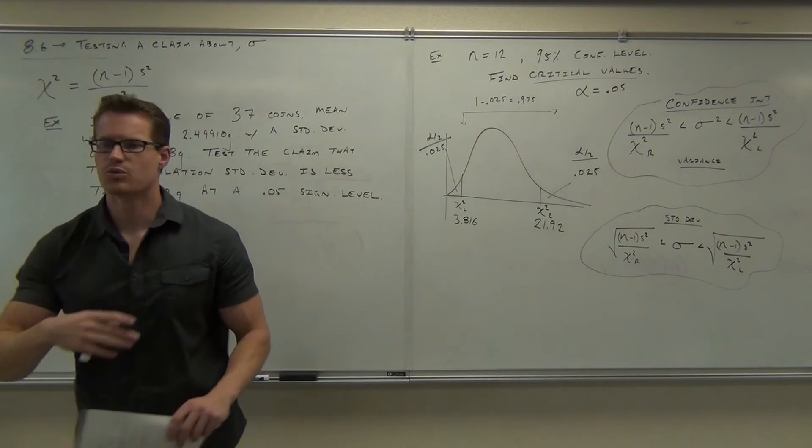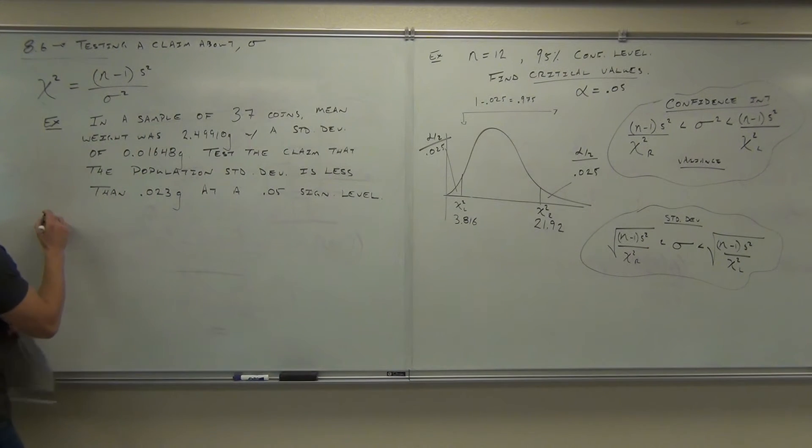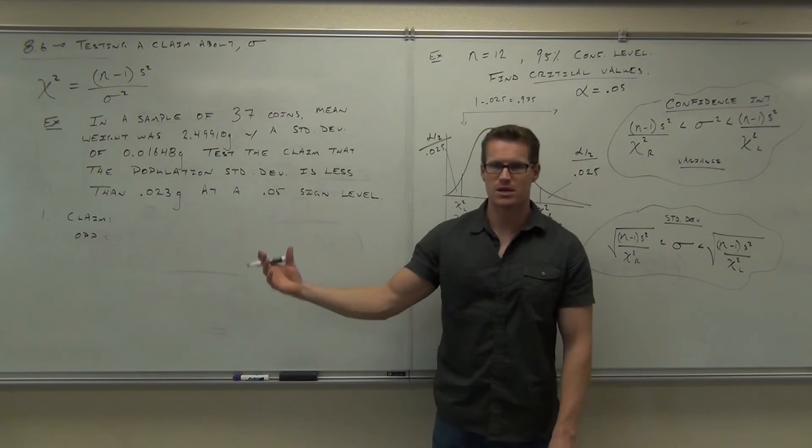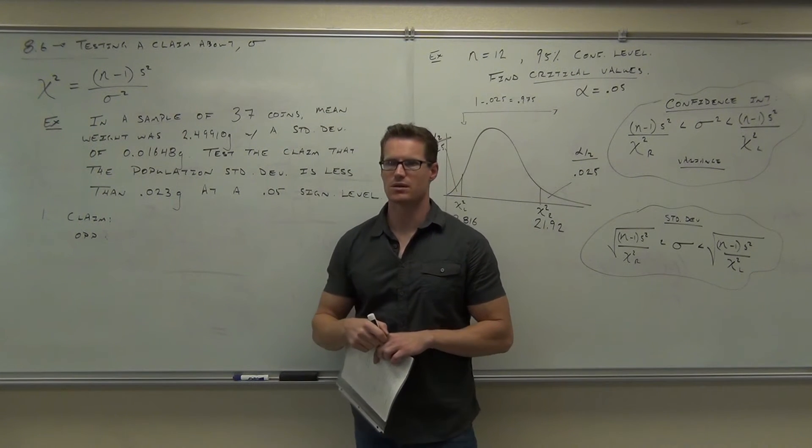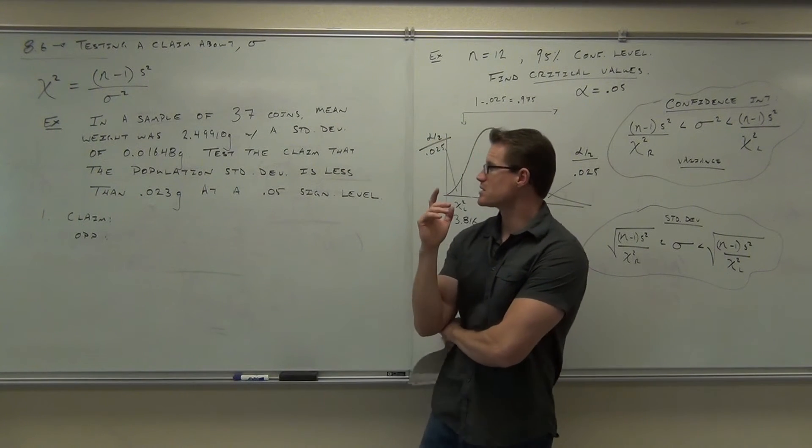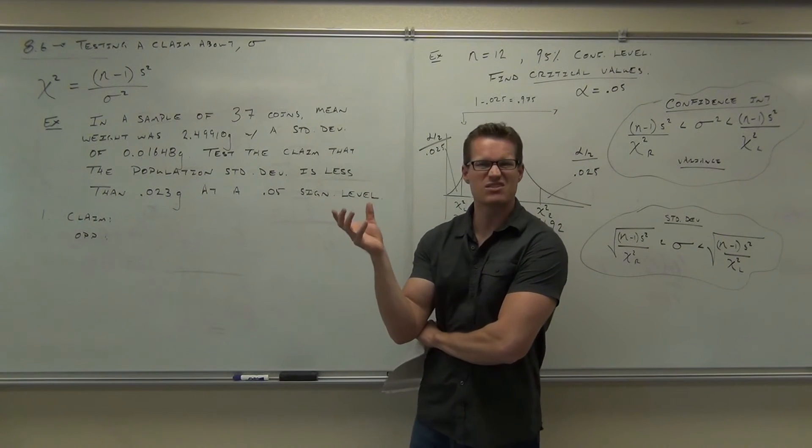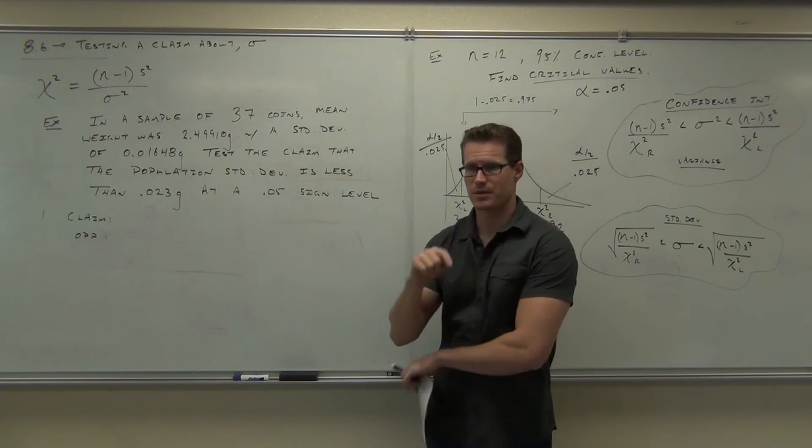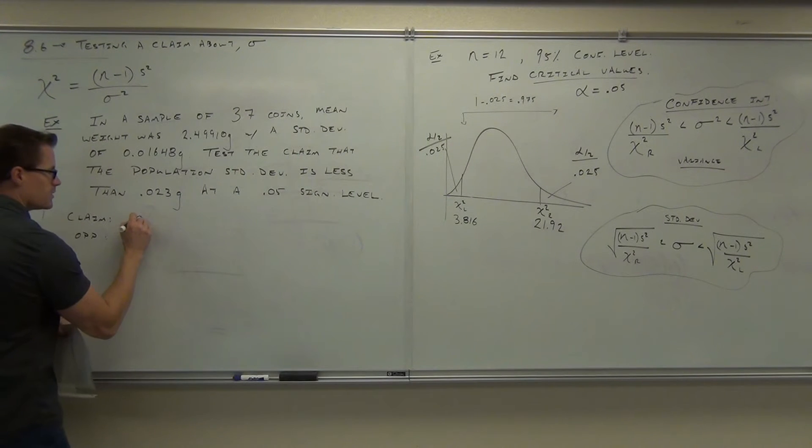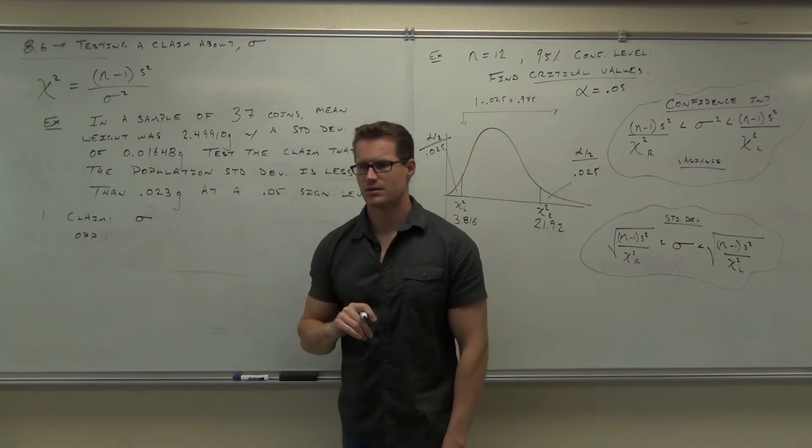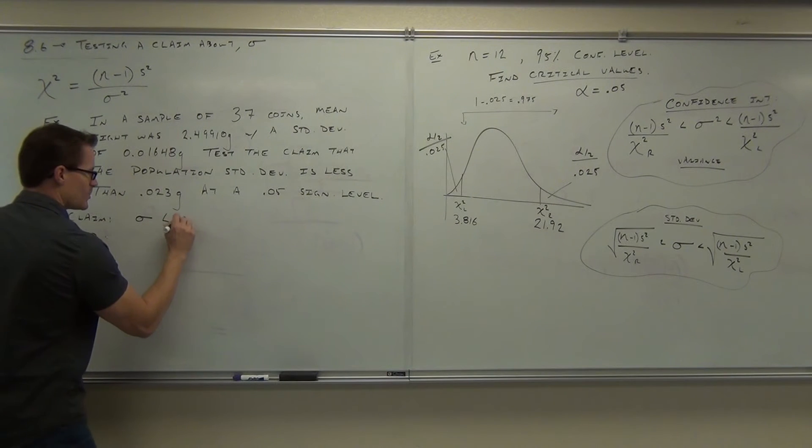Our claim hypothesis, everything's going to work exactly the same way. So step number one is your claim and the opposite. Now, of course, you have to use the right notation. Should we be using a mu here? Are we dealing with a mean? Should we deal with a p here? Is this a proportion? What is this? What's the claim say? The claim is, test the claim that the what? That gives it to you. What's the symbol for that? S would be the sample. Sigma would be the population standard deviation. So we're testing the claim that sigma is less than 0.023.